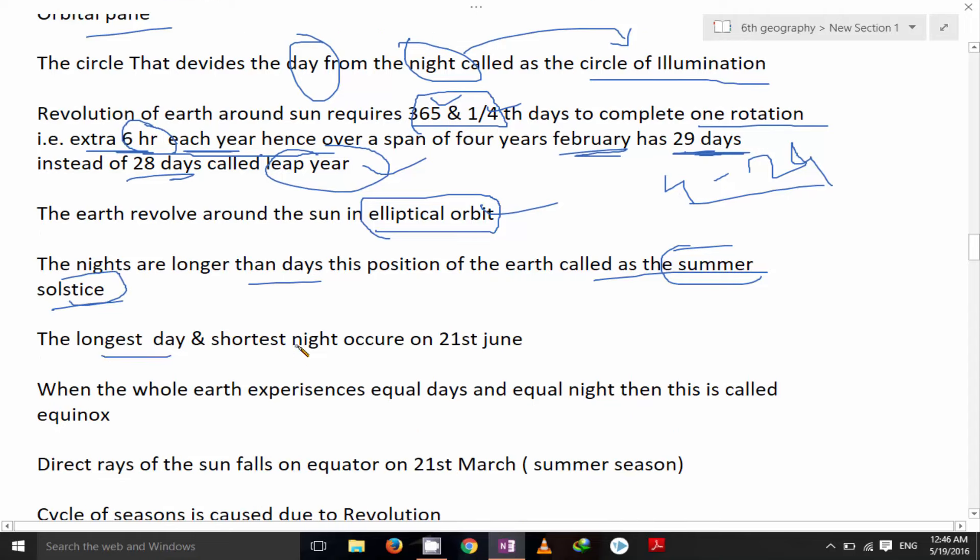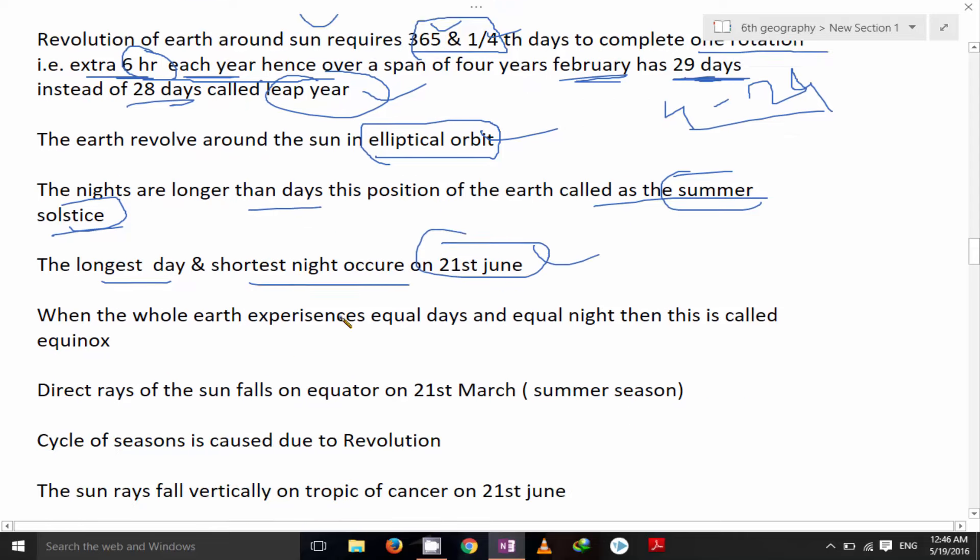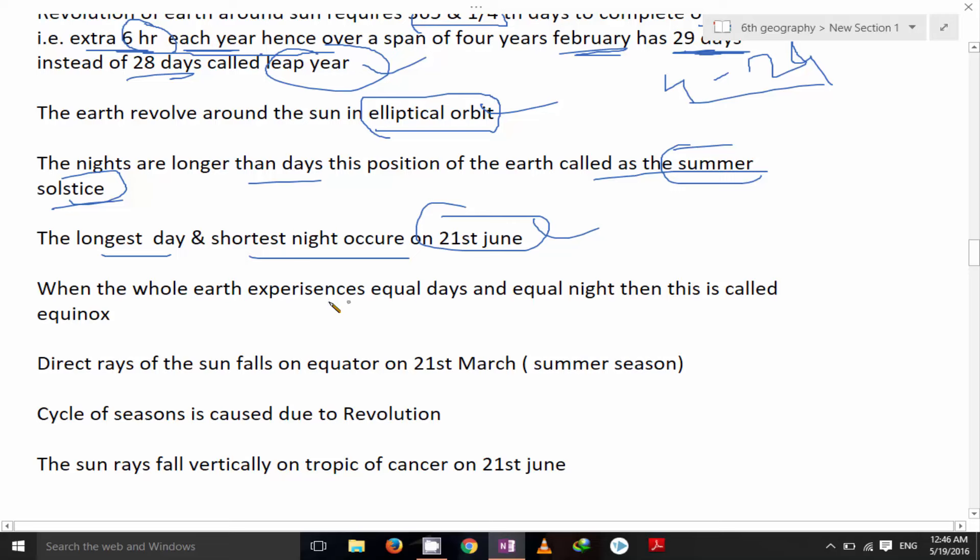The longest day and shortest nights occur on 21st June. When the whole earth experiences equal days and equal night, we call it as equinox. Direct rays of the sun falls on equator on 21st March.